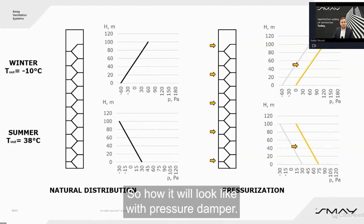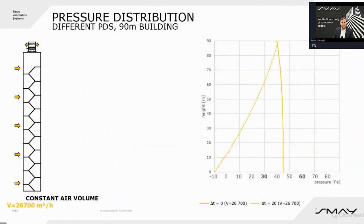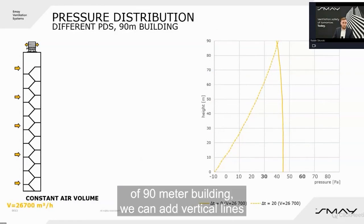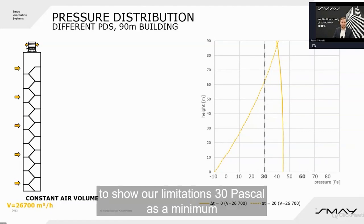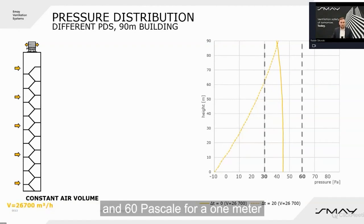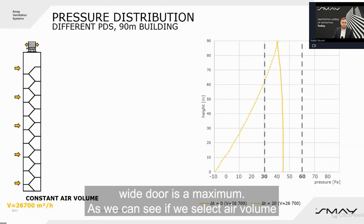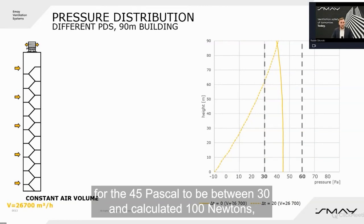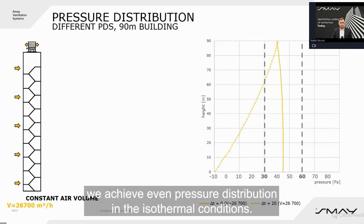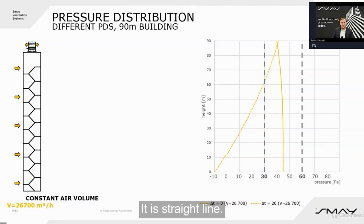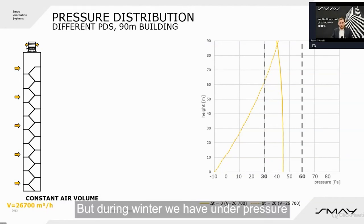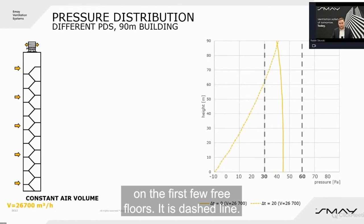Here we can see how it looks with a pressure relief damper, using the example of a 90-meter building. We can add vertical lines to show our limitations: 30 Pa as a minimum and 60 Pa for a 1-meter wide door as a maximum. If we select air volume for 45 Pa to be between 30 and a calculated 100 Newtons, we achieve even pressure distribution in isothermal conditions — shown as a straight line.